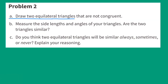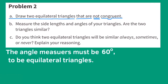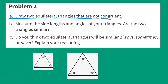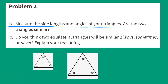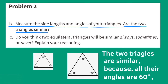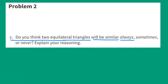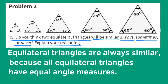Problem number two. Part A: Draw two equilateral triangles that are not congruent. The angle measures must be 60 degrees to be equilateral. Equilateral triangles that are not congruent must have different side lengths. Part B: Are the two triangles similar? Yes — the two triangles are similar because all their angles are 60 degrees, and their side lengths are proportional. Part C: Do you think two equilateral triangles will be similar always, sometimes, or never? Equilateral triangles are always similar because all equilateral triangles have equal angle measures.